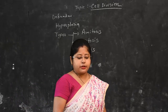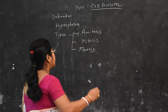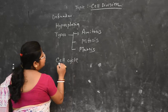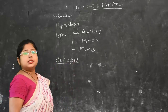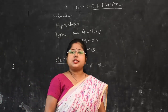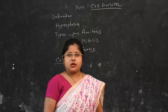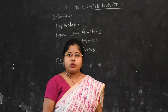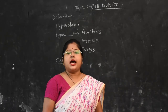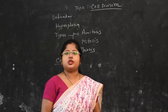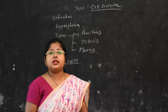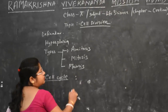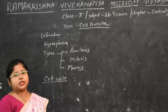Before going to the definitions, we should know about the Cell Cycle. The Cell Cycle is the cyclic event where each and every cell enters — it will grow, it will get mature, and get ready to give rise to two daughter cells. The entire Cell Cycle is divided into two major phases.